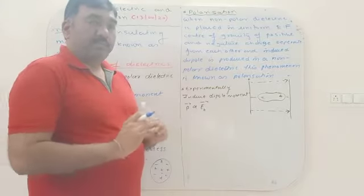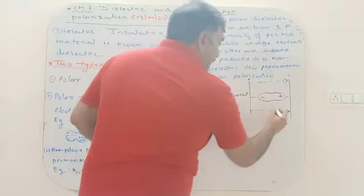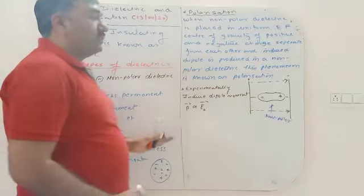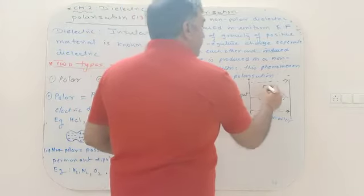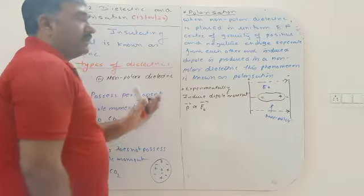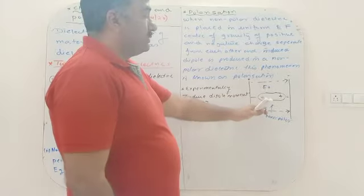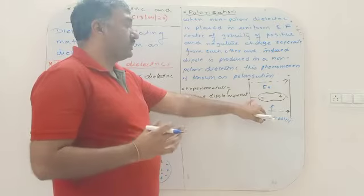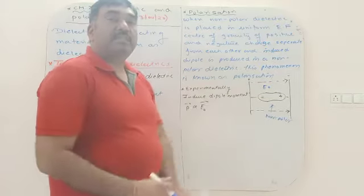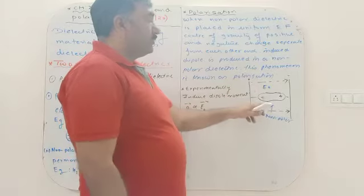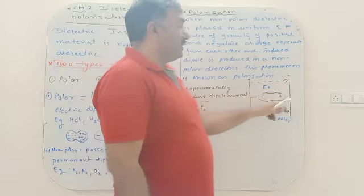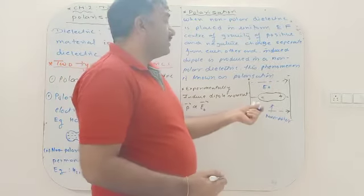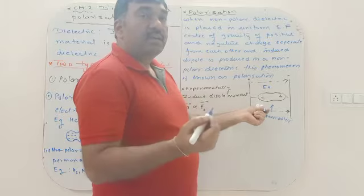Now, what is polarization? When a non-polar dielectric is placed in a uniform electric field between the two plates of a capacitor, the electric field exerts forces on the negative and positive charges, causing them to separate. Negative charges move towards the positive plate and positive charges towards the negative plate, inducing a dipole. This phenomenon is known as polarization.